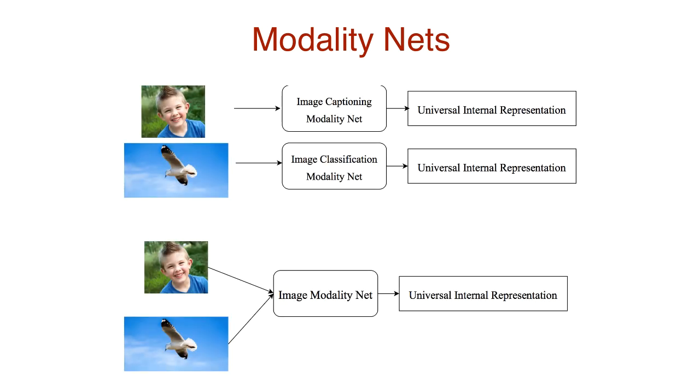Modality nets are designed for every domain and not every task. So instead of dealing with different modality nets for, say, image captioning and image classification, since they have the same input domain dealing with input images, they can be passed through the same modality net. This enhances generalization and allows new tasks to be added on the fly without much change to the overall network.